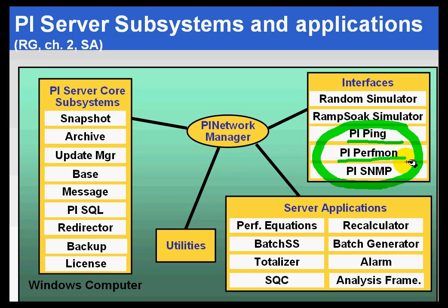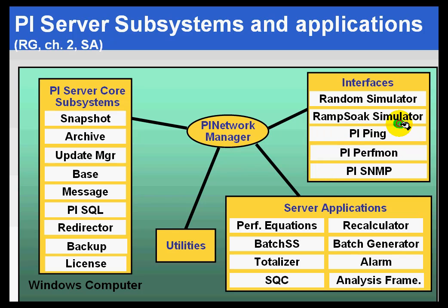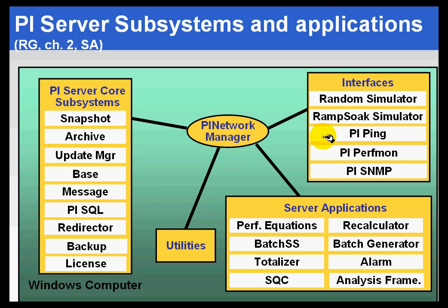PI PerfMon monitors performance counters such as network usage, CPU usage, network I/O — all of that can be monitored and stored in PI tags. For SNMP devices like routers, switches, or even printers — anything that publishes performance data using the SNMP protocol — the SNMP interface can read that. These three are basically demo interfaces; they are not the fully licensed version, so there are some restrictions we will describe later. But they are fairly useful for diagnosing problems on your local machines.